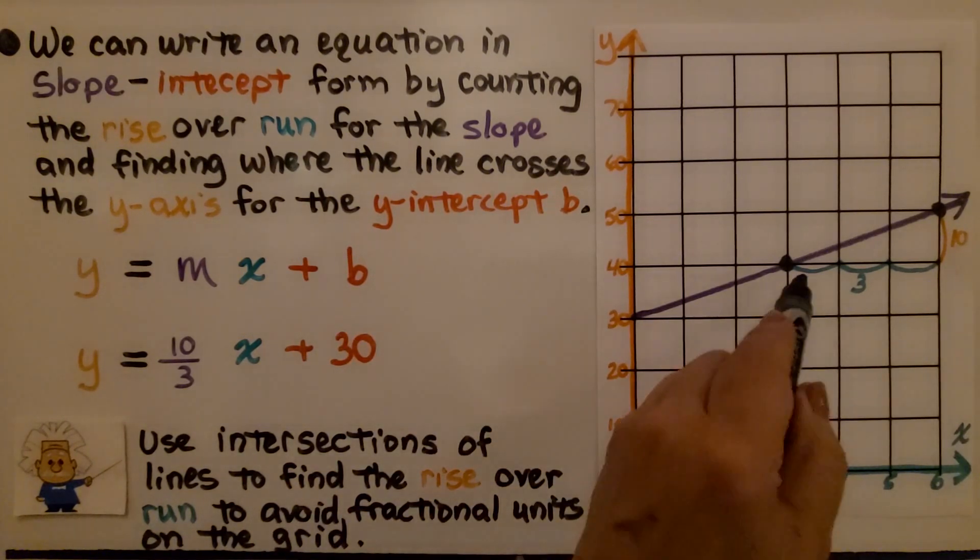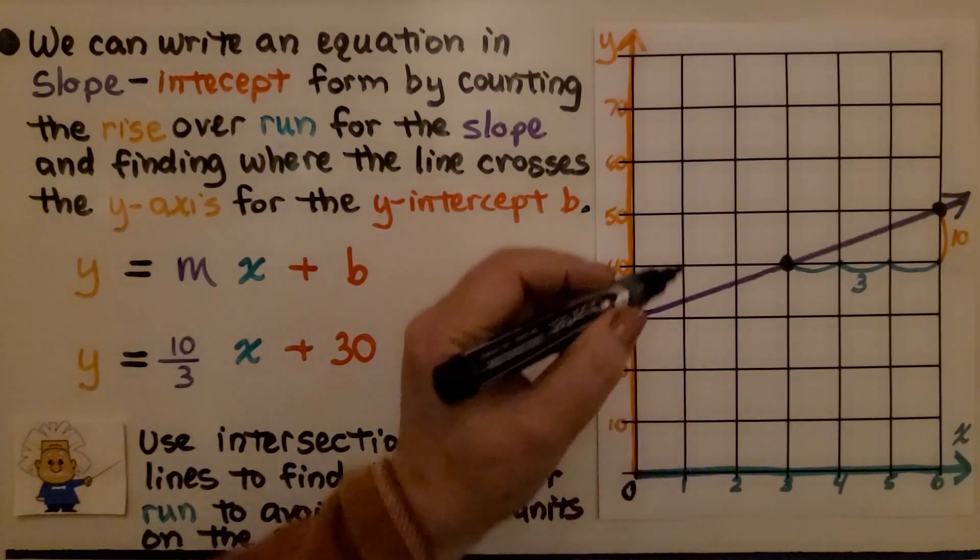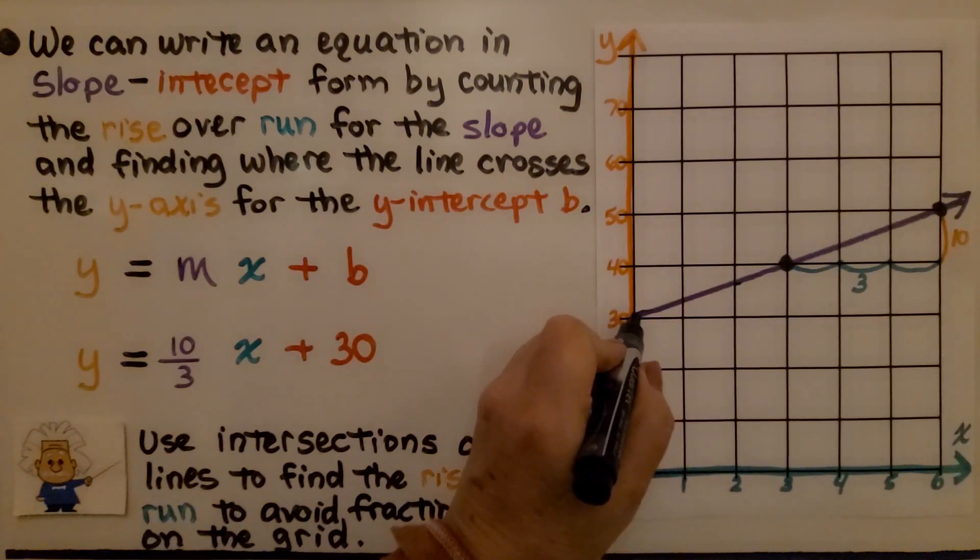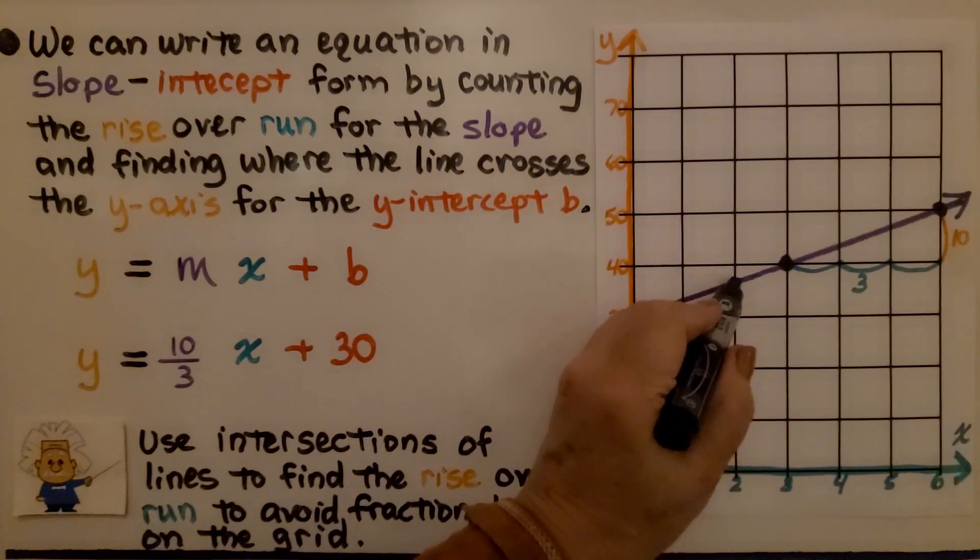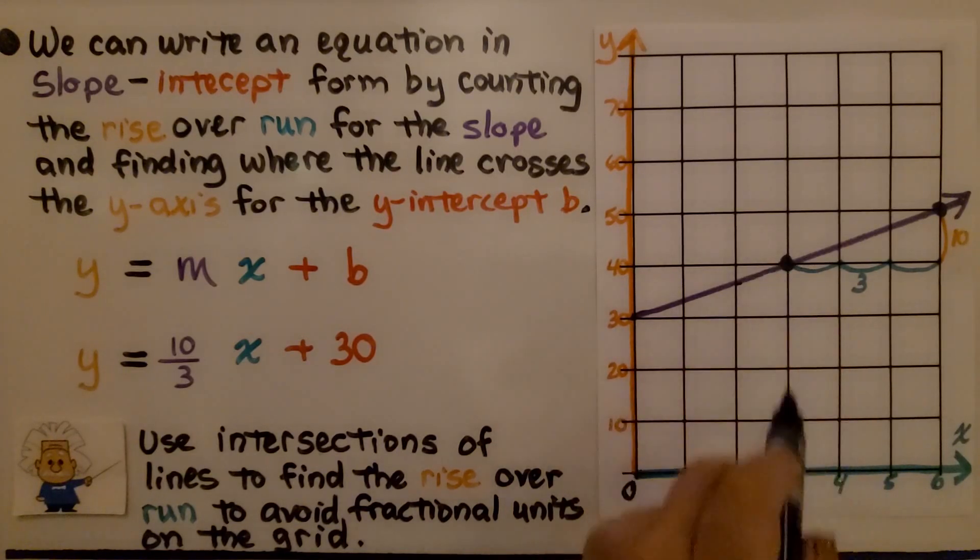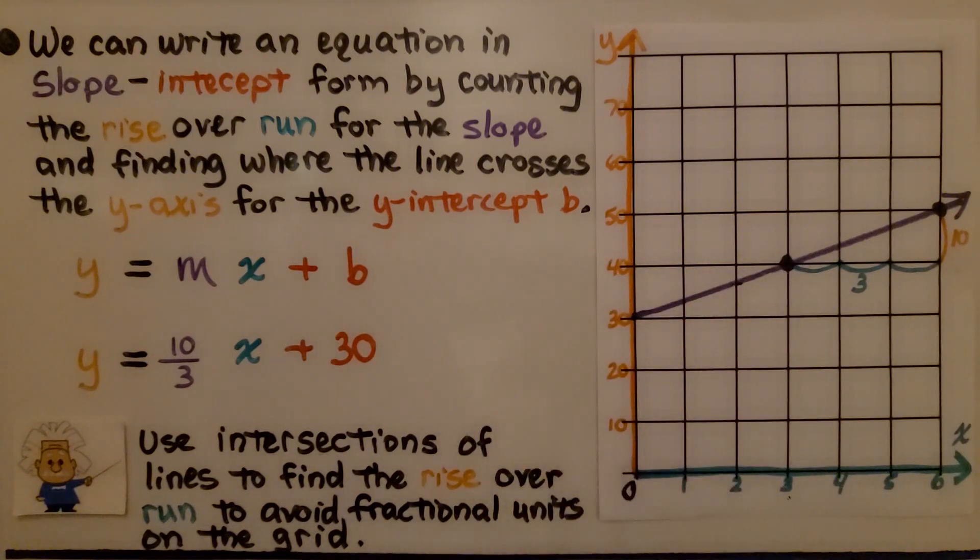If we choose these intersecting lines, we'll avoid fractional units on the grid. If we didn't choose the intersections of lines, and we chose a spot like right here to right here, we would have had two-thirds right here. This is two-thirds of one of these squares on the grid. It's easier to choose the intersection of two lines because then we'll have an absolute number and we'll be more accurate.